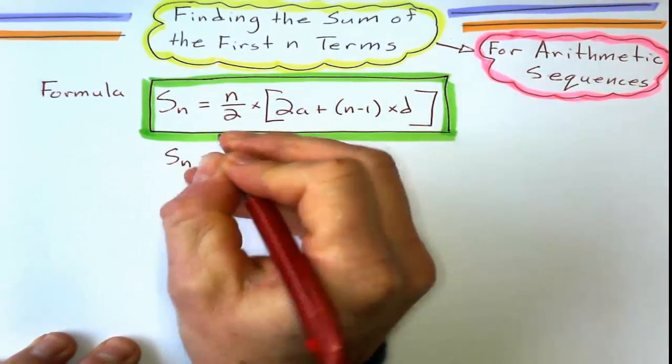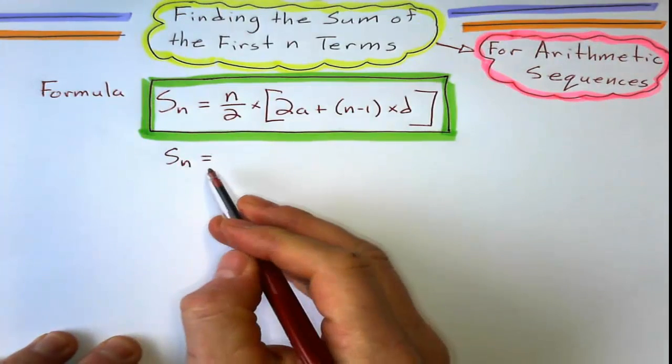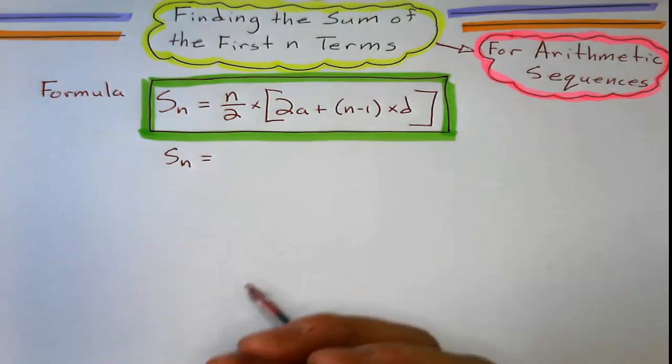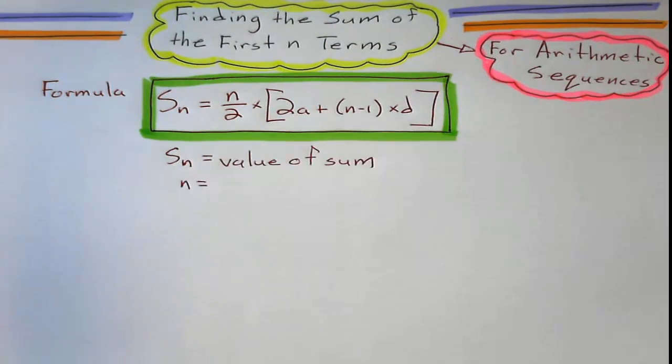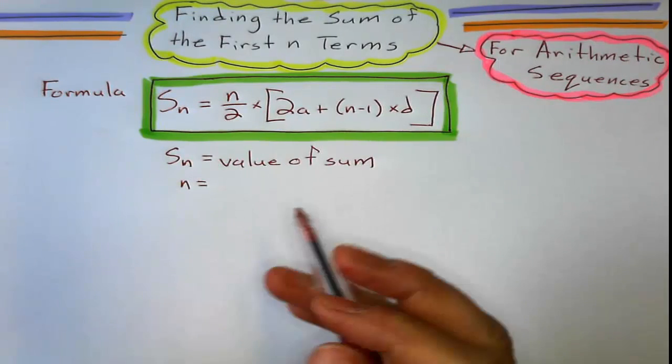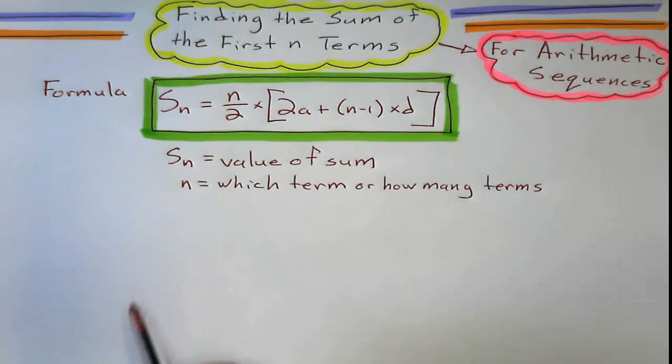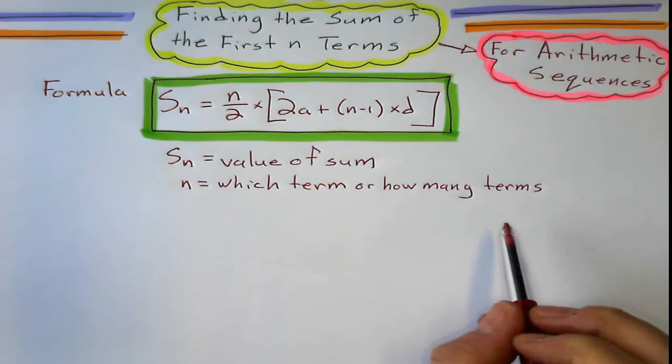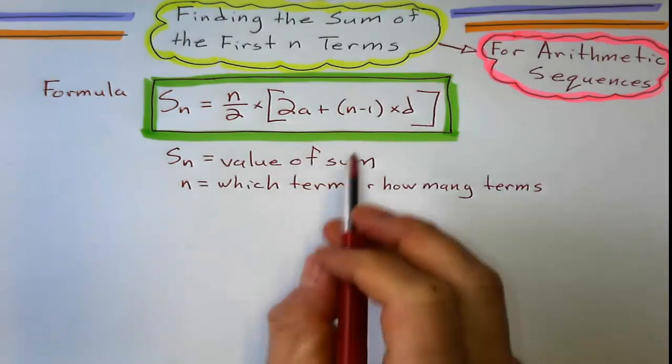S sub n is going to be the value of the sum, not which term it is, but the value of the sum, and n is going to be which term is it. I said which term or how many terms, if it says for the first 16 terms of the sequence, then n is going to be 16.